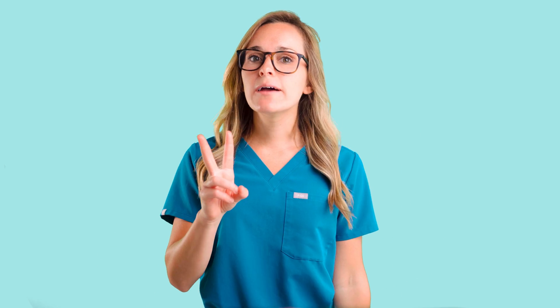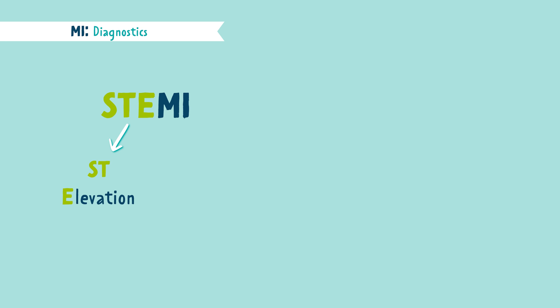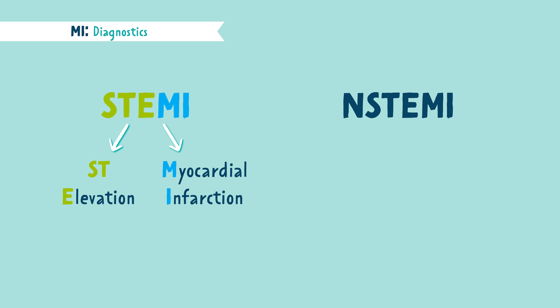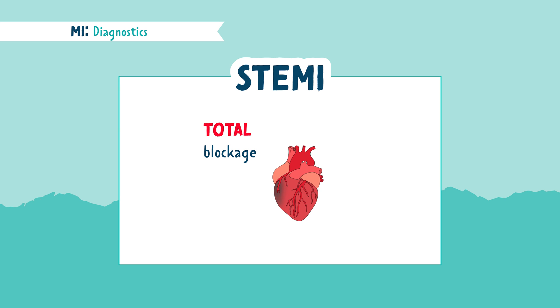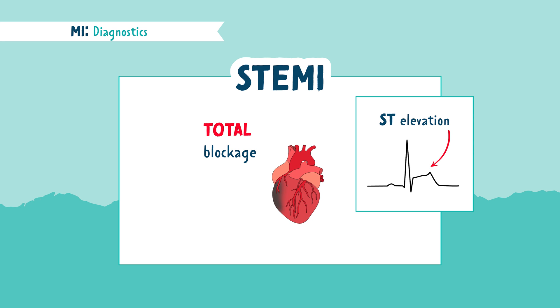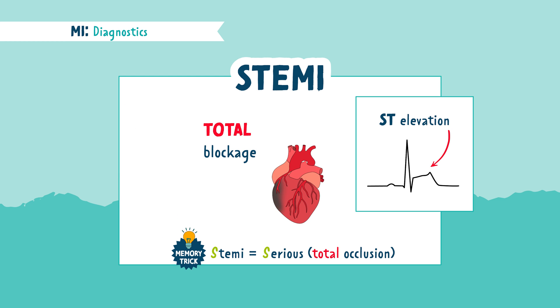Let's break apart how to diagnose an MI. There are two types of myocardial infarctions, named by the way they appear on an electrocardiogram or EKG rhythm strip. The first type is a STEMI, which means ST elevation myocardial infarction. The second type is a non-STEMI or NSTEMI, which means a non-ST elevation myocardial infarction. A STEMI occurs when there is a total occlusion of a main coronary blood vessel, showing as an ST elevation on an EKG. Think STEMI — think serious, total occlusion.